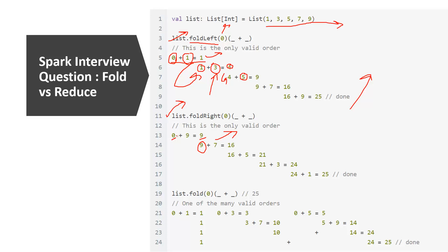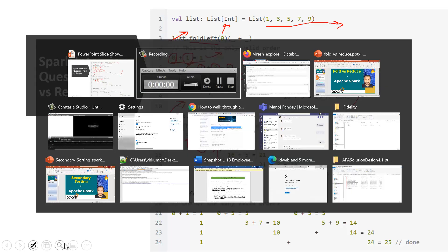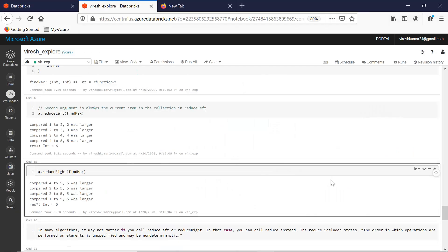For foldRight, similarly the seed value is always the first element. Because we are iterating from right to left, the last element — which happens to be value 9 — is invoked first. The result yielded by the operation goes as the first argument, and the second argument becomes the next current element in the right-to-left iteration.